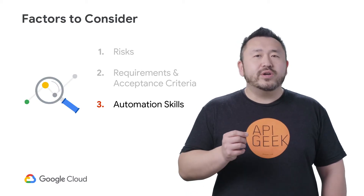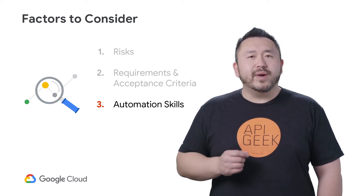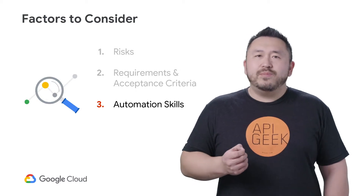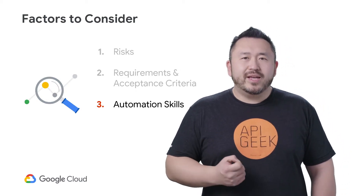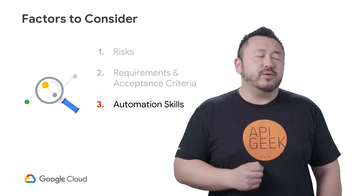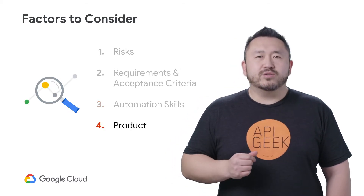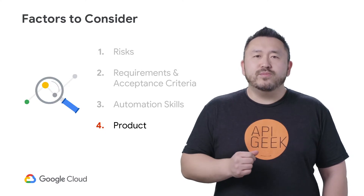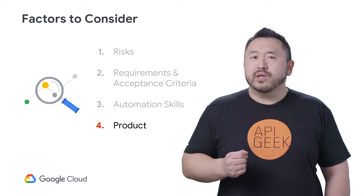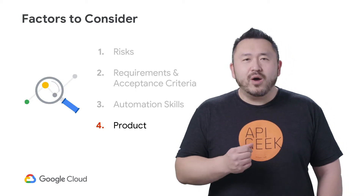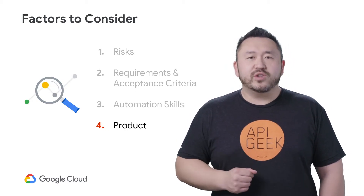As testing becomes increasingly automated, QA engineers are replacing manual testing efforts. Your API team and testers should share automation testing and QA skills as well as an understanding of the key test frameworks in the development cycle. Understand how your products work and how the tools can be used to help maintain your quality assurance.